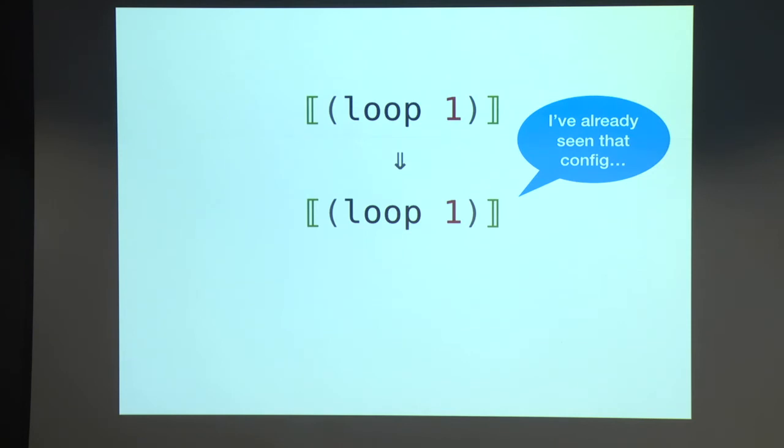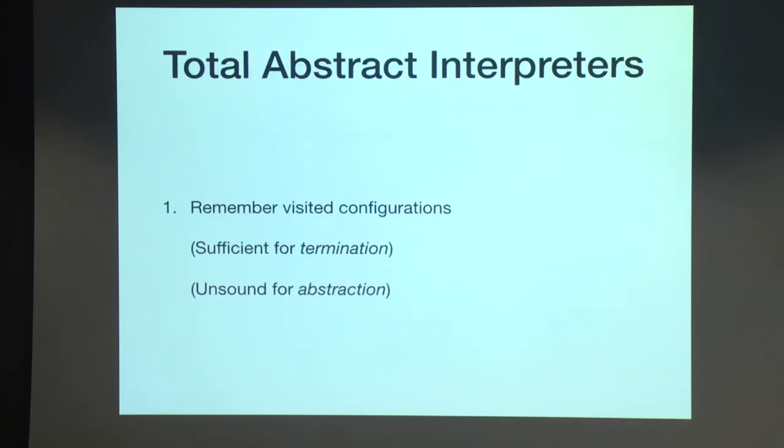So what we do is we instrument the interpreter to say, look for states that it's already seen before. And if it's seen that state, just return the empty set because we've detected a loop. So this procedure will never return because we've detected a loop. So this technique is actually sound, although not always terminating thing to do for a concrete interpreter. For an abstract interpreter, because the state space is finite, it's actually sufficient for termination, but it's actually unsound in the presence of abstraction.